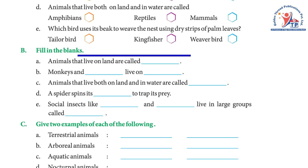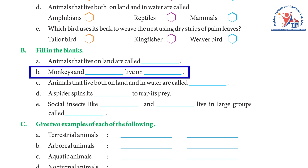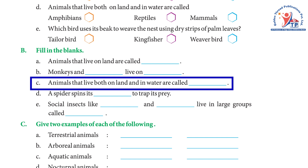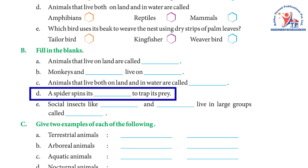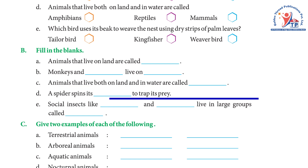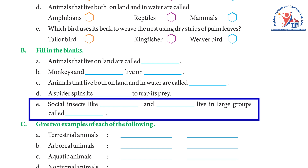Exercise B — Fill in the blanks: (a) Animals that live on land are called — terrestrial. (b) Monkeys and chimpanzees live on trees — answer: chimpanzee, tree. (c) Animals that live both on land and in water are called — amphibians. (d) A spider spins its web to trap its prey — answer: web. (e) Social insects like honeybees and wasps live in large groups called — colonies.